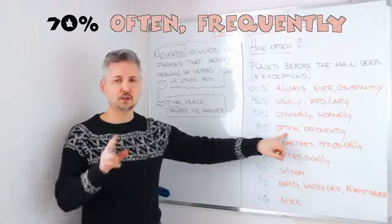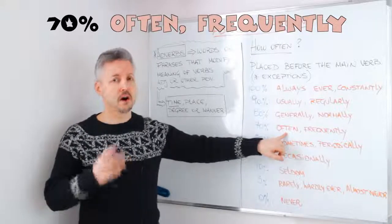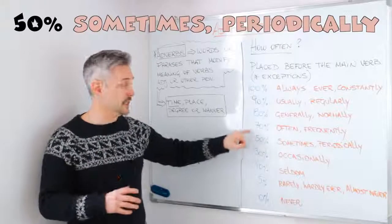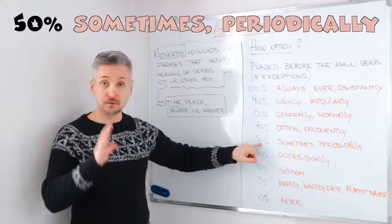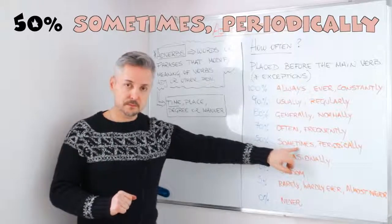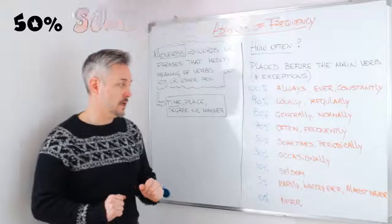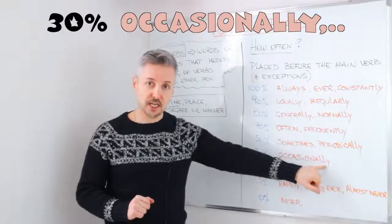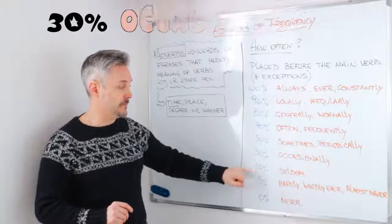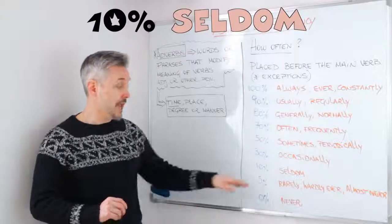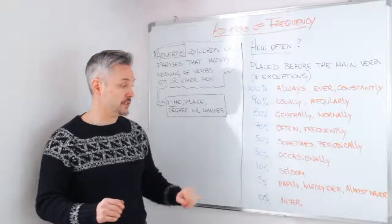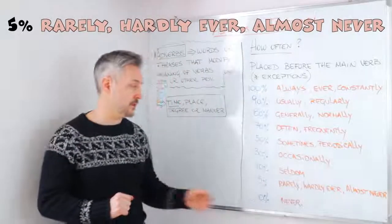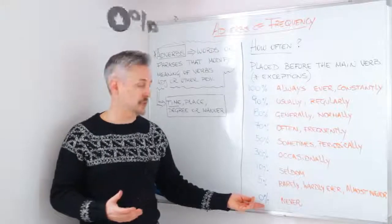There are two pronunciations — you can say "often" or "often"; it's your choice. Frequently. Then we have 50%: sometimes, periodically. Then 30%: occasionally. 10%: seldom. 5%: rarely, hardly ever, almost never. And 0%: never.